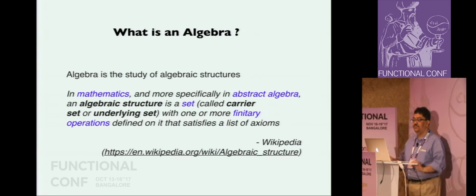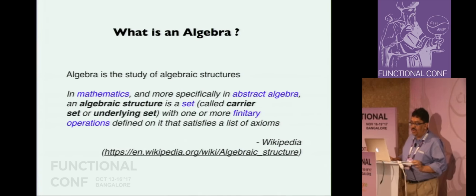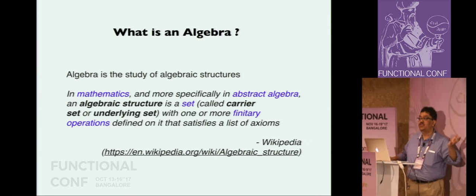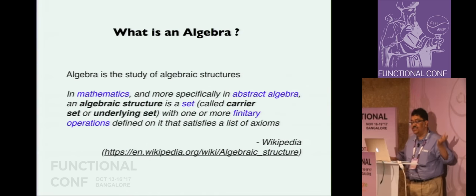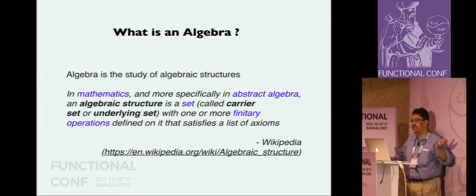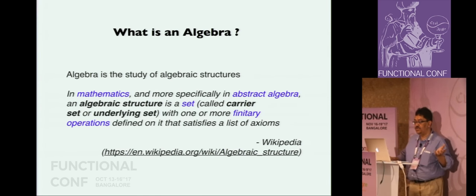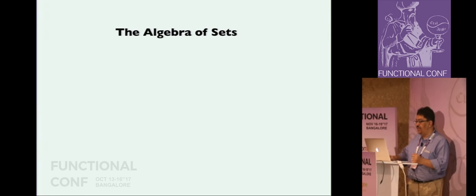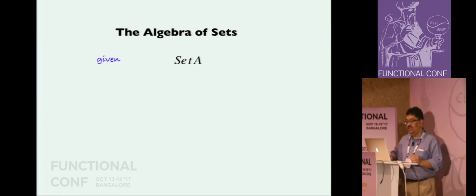So, algebra. This is the definition of algebraic structure from Wikipedia. The point to note is that the definition of an algebraic structure is completely generic - it does not specify any concrete type. We are not talking about algebraic structure for integers or any other data type. Algebraic structure is defined generically, and every algebraic structure can be defined by adding more and more constraints. For example, this mentions about operations - we can constrain some of the operations to refine our existing algebra.